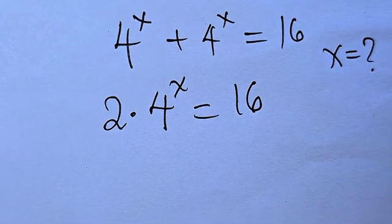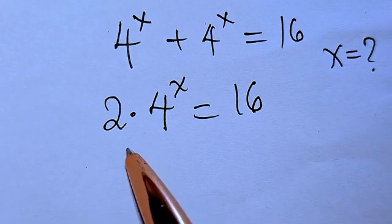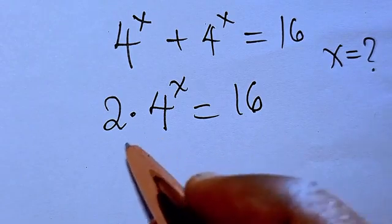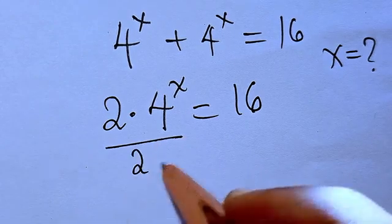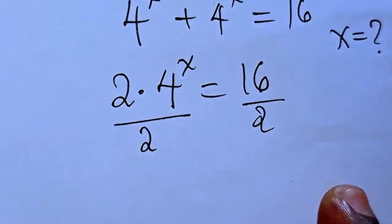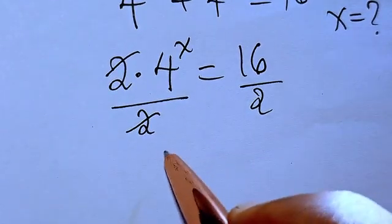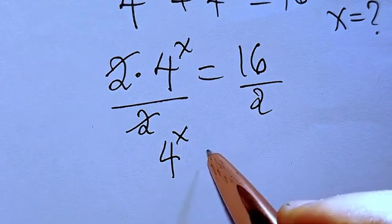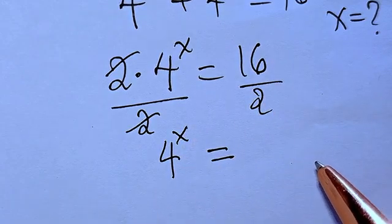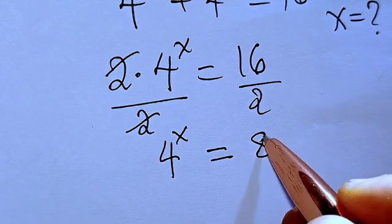Now from here we can see that we can break this equation further by dividing 2 by 2. So we cancel this. I have 4 to the power of x equals 16 divided by 2, which will give me 8.